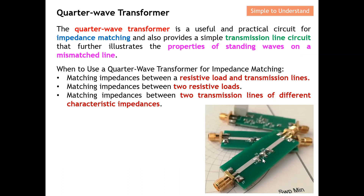If you take a look at this diagram, imagine that this is the input and output port. Basically, most of the time this part is 50 ohms. Let's say this is a transistor — the input impedance of the transistor typically won't be at 50 ohms, so we can implement this quarter wave transformer to perform impedance matching. The length of this transformer will be lambda over four — a quarter wavelength — which gives you an idea of how easy it is to use.